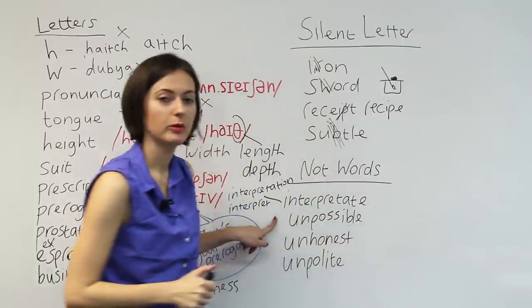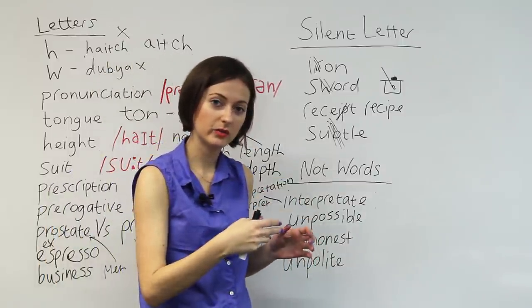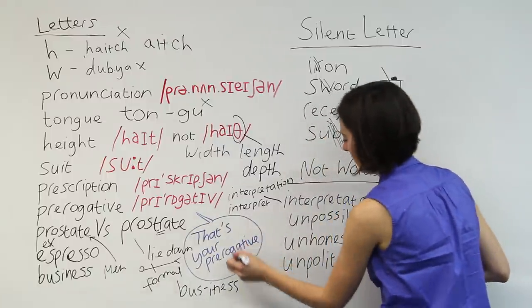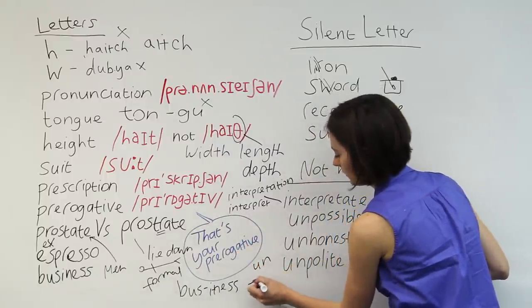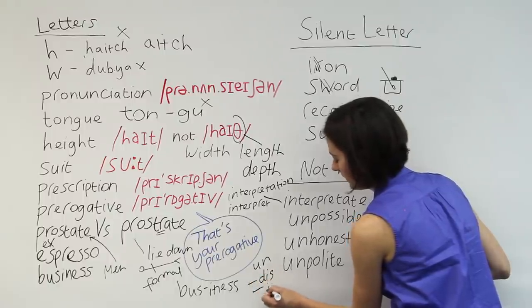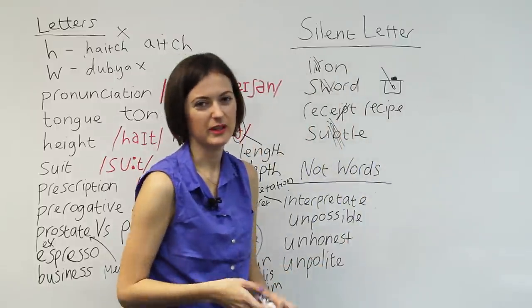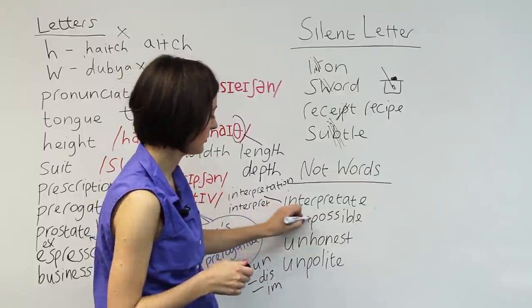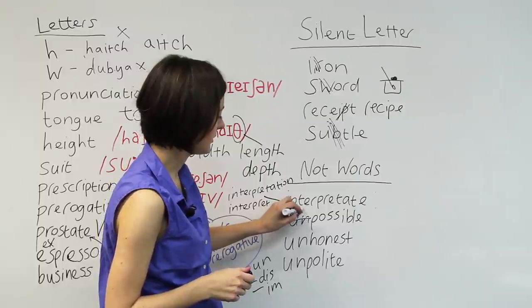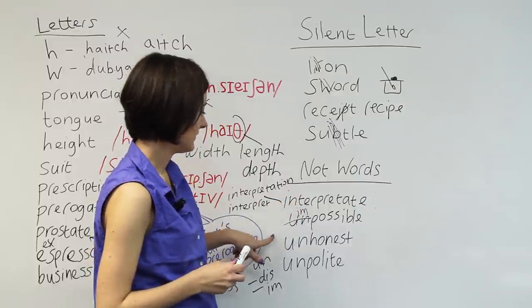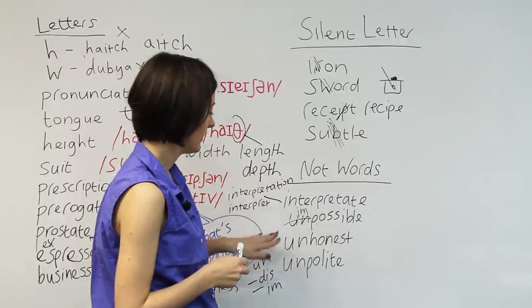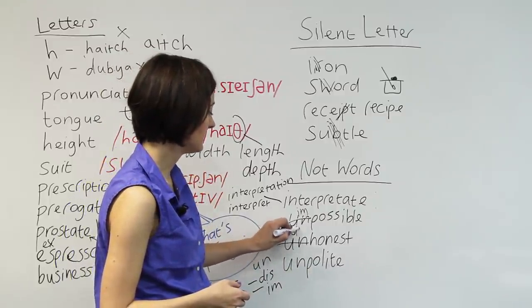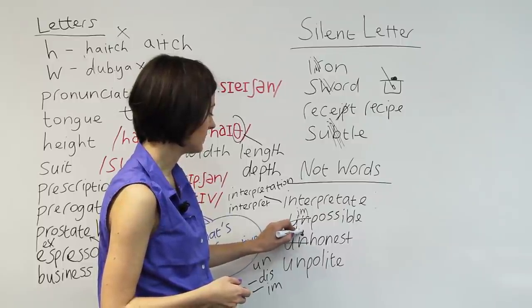What about unpossible? When we make words to show the opposite, sometimes we use un, sometimes we use dis, sometimes we use im. So that one's just a case of people using the wrong prefix on the word. Should be impossible. Something is impossible, you can't do it. And next example, unhonest. Again, the same kind of mistake. We don't say unhonest. We actually use dis in this case. Someone is a dishonest person. He's a liar. Bad liar. Dishonest person.